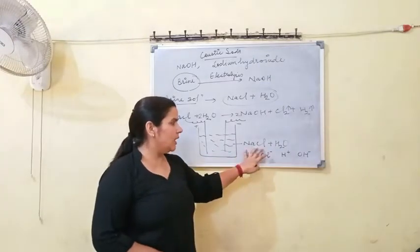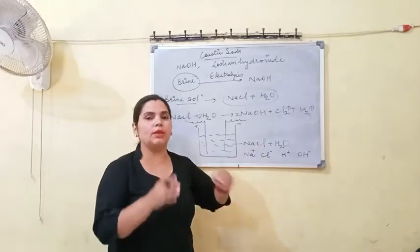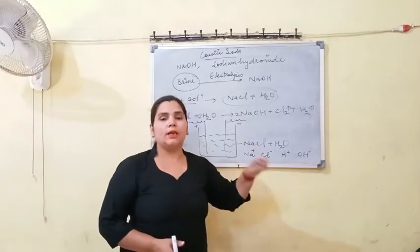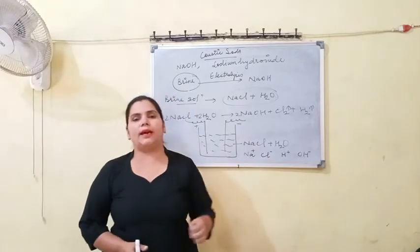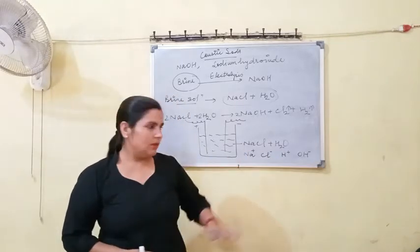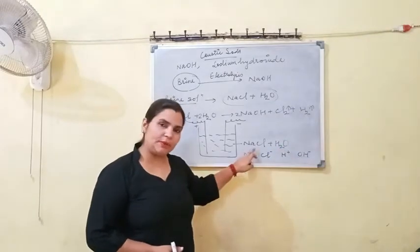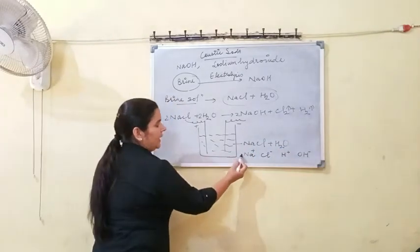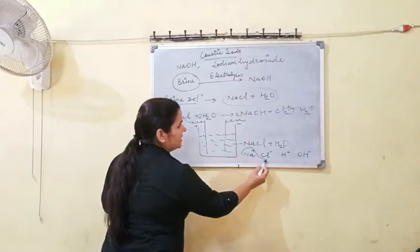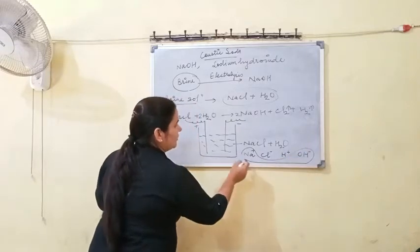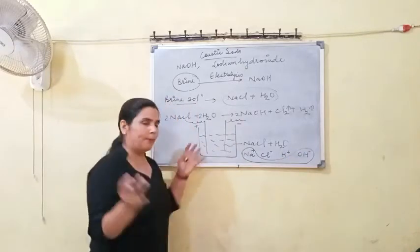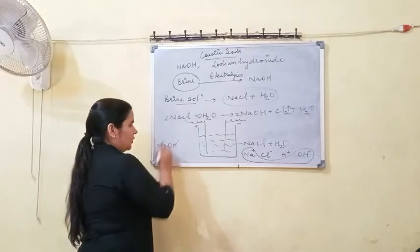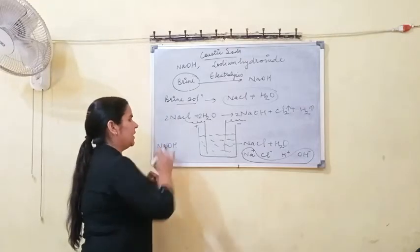When NaCl is ionized, it completely ionizes, whereas water is only partially ionized. In this condition, Na⁺ and OH⁻ combine together and they form NaOH.